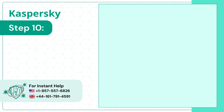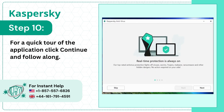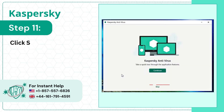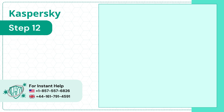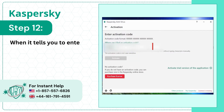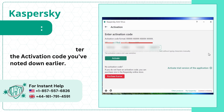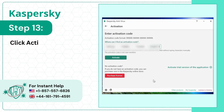Step 10: For a quick tour of the application, click Continue and follow along. Step 11: Click Skip if you do not wish to take the tour. Step 12: When it tells you to enter the activation code, enter the activation code you noted down earlier. Step 13: Click Activate.